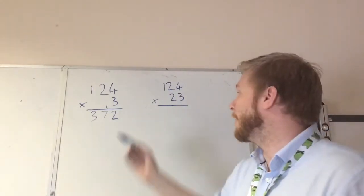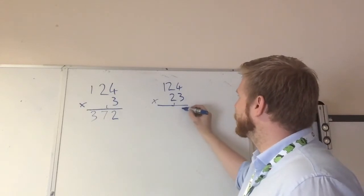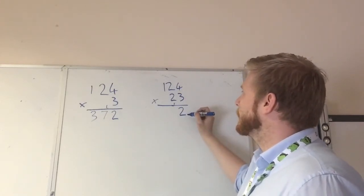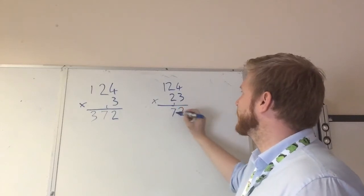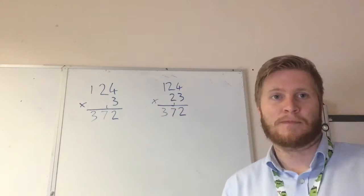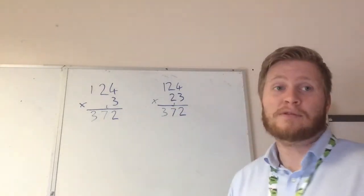So what we're going to do is we're going to do our units first. So we're going to times this number by 3. Let's do it a bit quicker, because we've already done it. So we know 3 times 4 is 12. Then we do our 3 times 2, which is 6, plus our 1 is 7. Then we do our 3 times 1, which is 3. So we have the same number, obviously because we've done the same sum. But we don't want 124 times 3, we want 124 times 23.